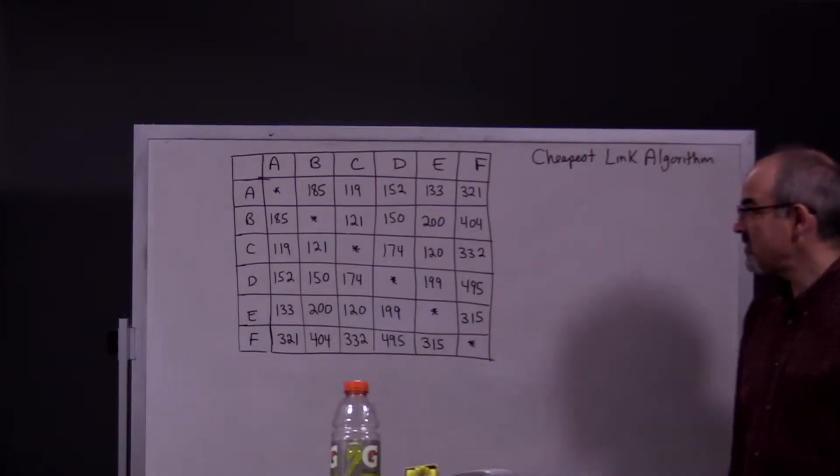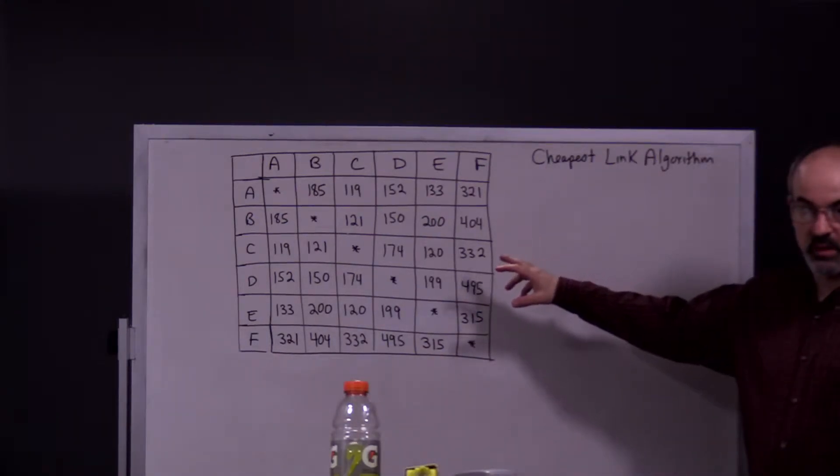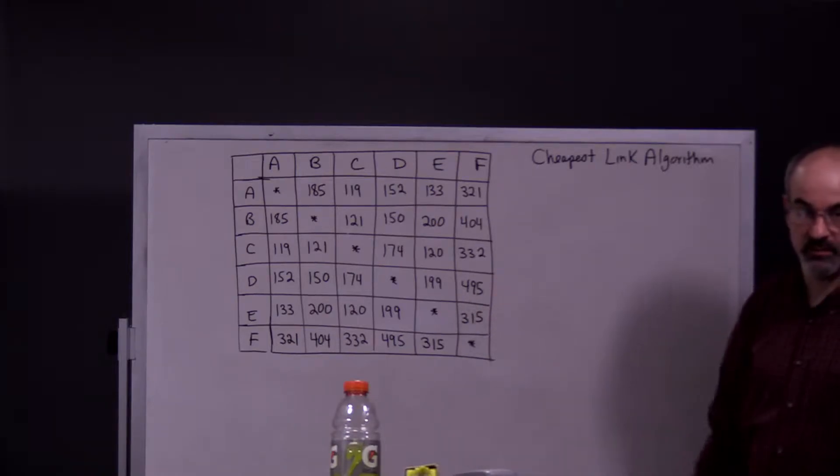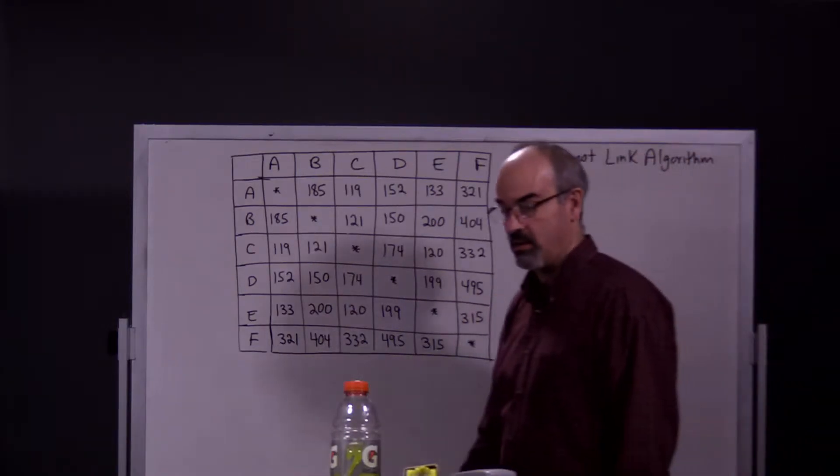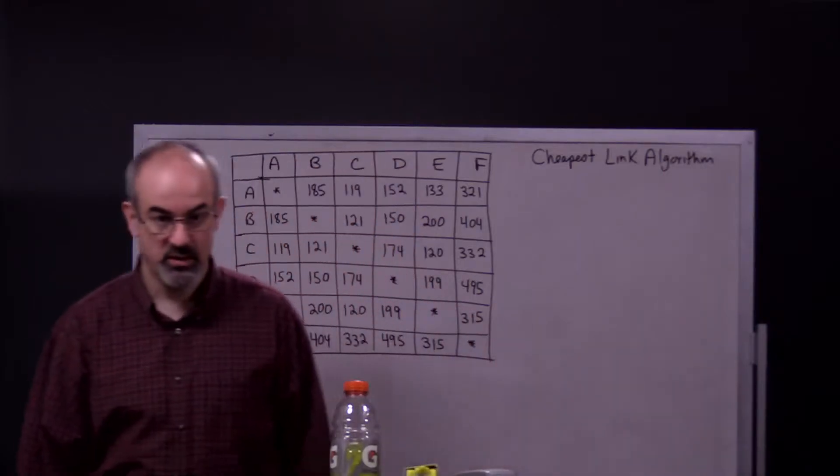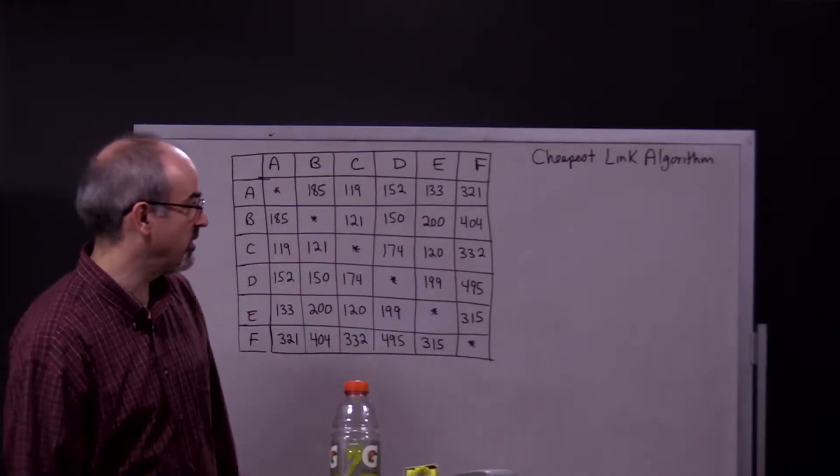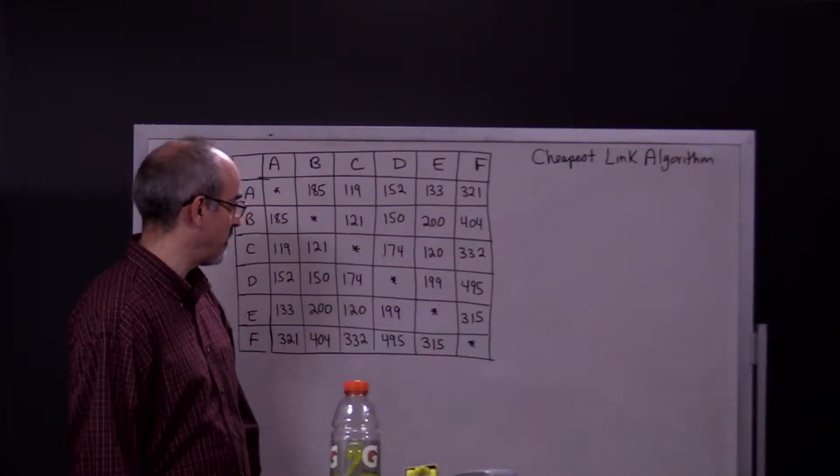In this video we're going to see how to use a chart to find an approximate tour using the cheapest link algorithm.